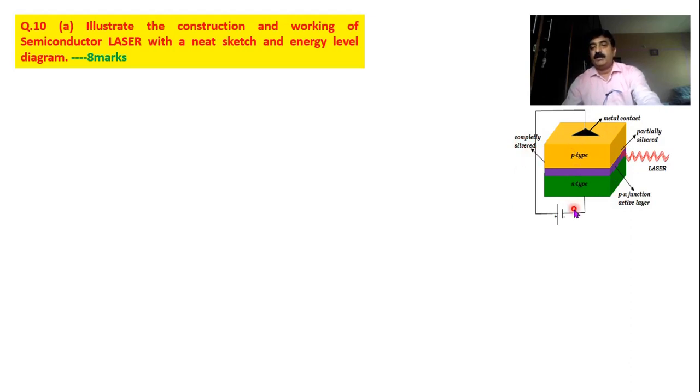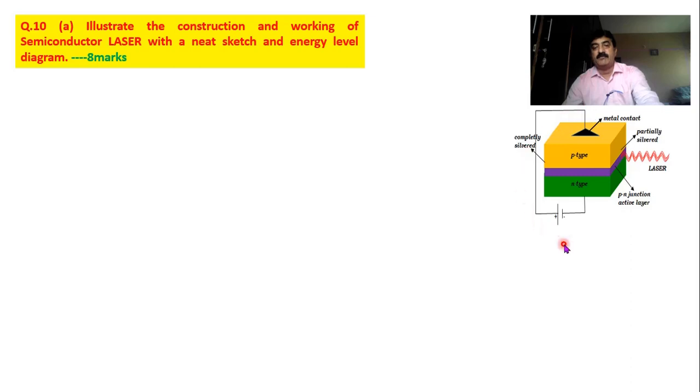Finally, photons escape from the partially silvered face — that is what the wave structure represents, so laser comes out from the partially silvered side. The top and bottom are connected to metal terminals so they act as electrodes. Between these two terminals you connect the power supply for biasing. The n-type is connected to negative and p-type is connected to positive, making it a forward biased structure.